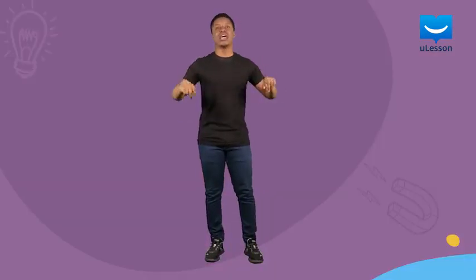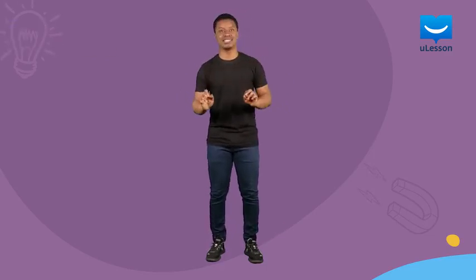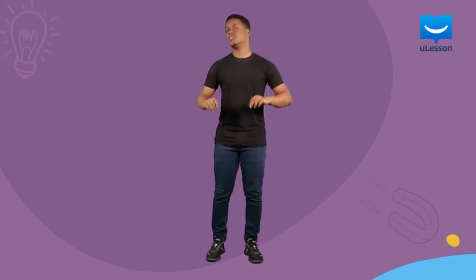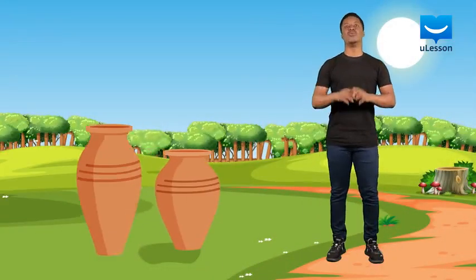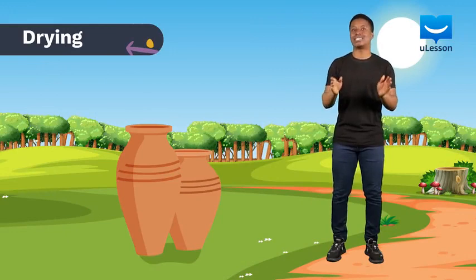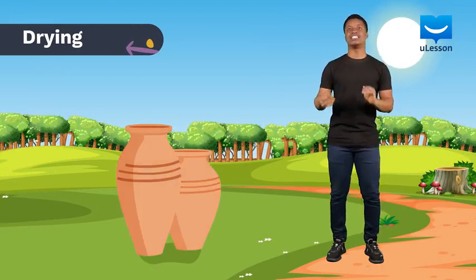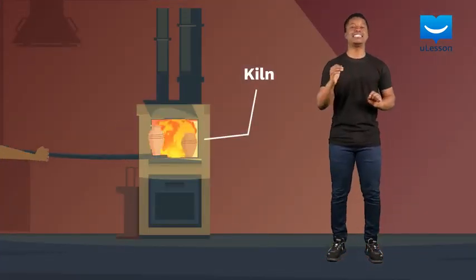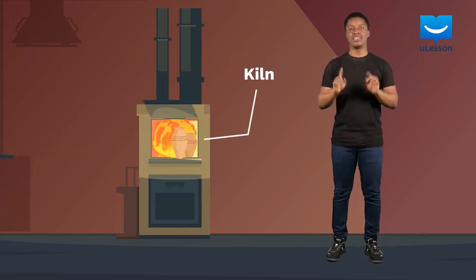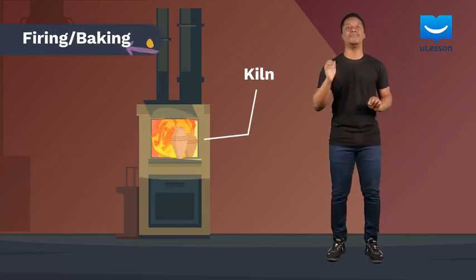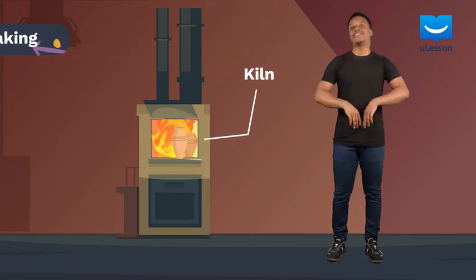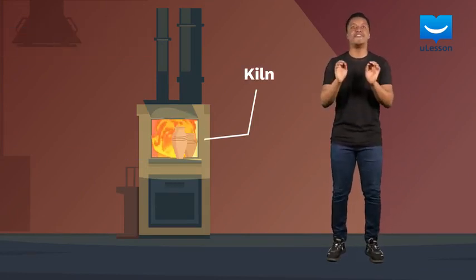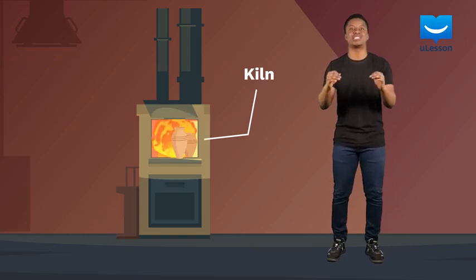When this is done, the shaping process commences. We will look at some shaping processes in a future lesson. For now, let us look at what happens after the clay mixture is shaped. When the clay mixture is shaped, it is still wet and soft. To harden it, it is dried under the sun. When it is dry enough, it is placed in a kiln and heated. This process is called firing or baking. Firing clay products makes them very hard and protects them from water damage.